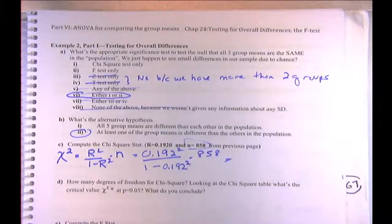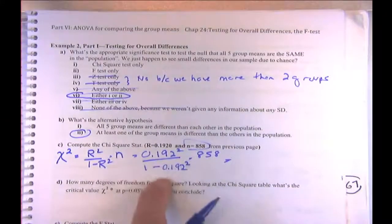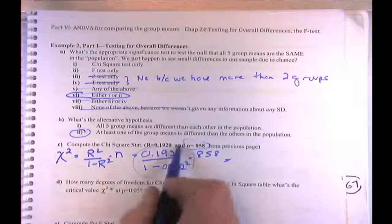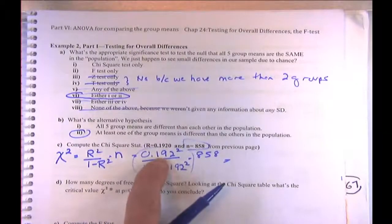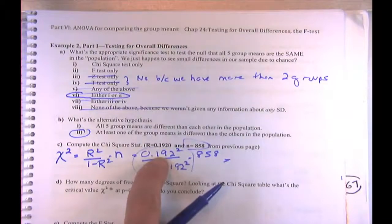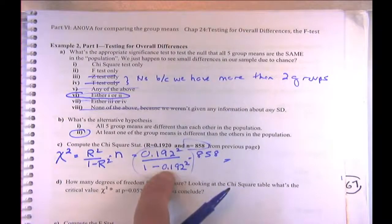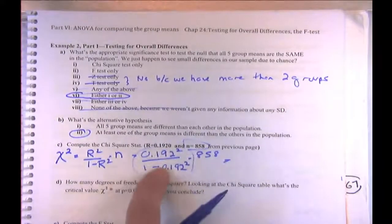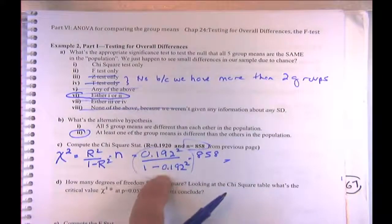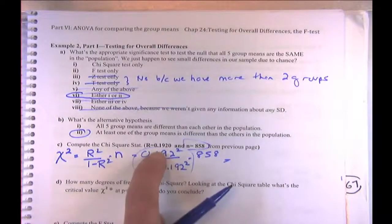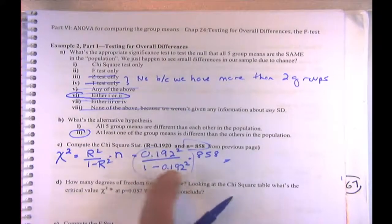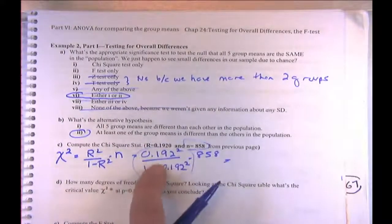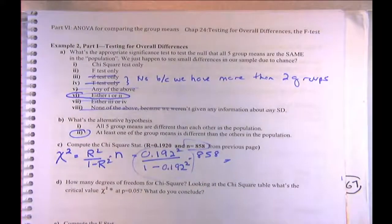This part — r-squared over 1 minus r-squared — assesses the strength of our model over the strength of our errors. The bigger this ratio is, the more significance we have. The smallest it can be is 0. We have a small ratio here, so let's compute it.